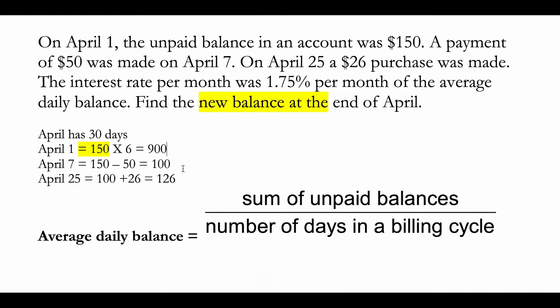On April 7th, your account balance showed $100. From April 7th until April 24th, there was no other activity — that's a total of 18 days. So 100 multiplied by 18 equals $1,800.